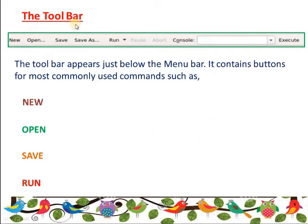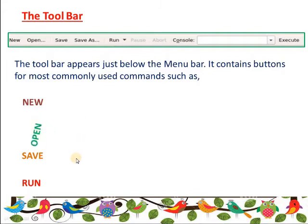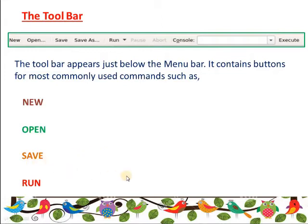After that, we have the toolbar. The toolbar is present right after the menu bar on the K-Turtle screen window. It appears just below the menu bar and contains buttons for the most commonly used commands such as New, Open, Save, and Run. You can use these buttons to create a new canvas page, open an existing file, save your work, or run your commands.